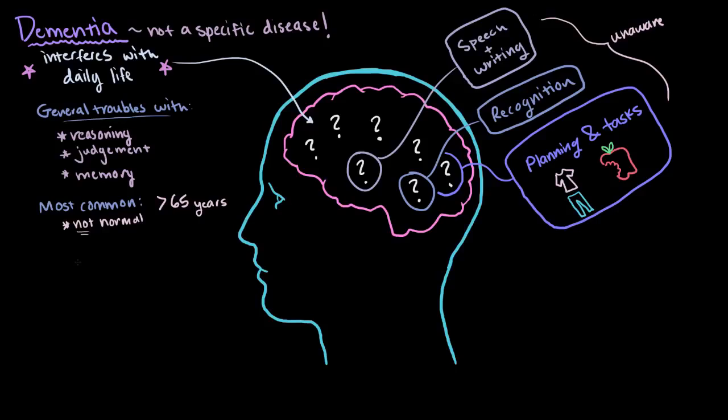So dementia, in very general terms, is something we use to describe when someone has troubles learning, remembering, and communicating. But where does Alzheimer's disease fit into this?